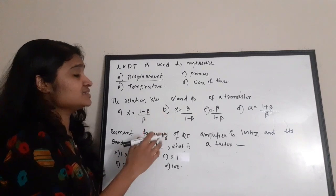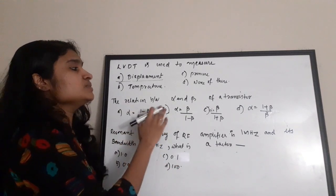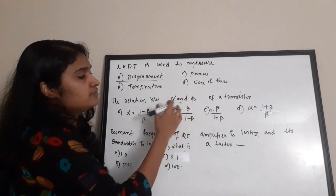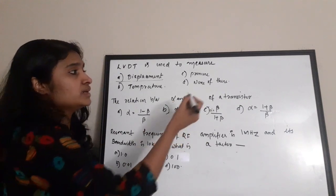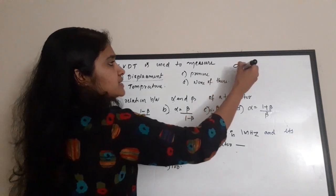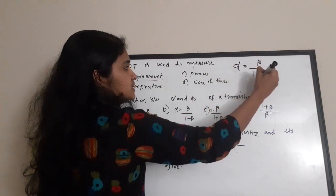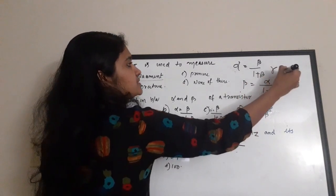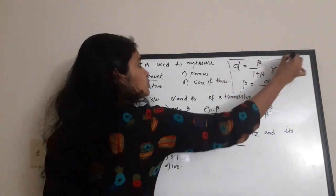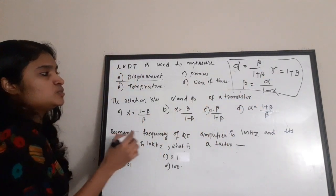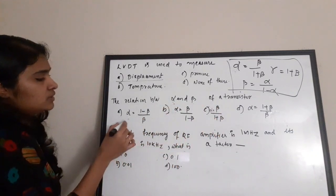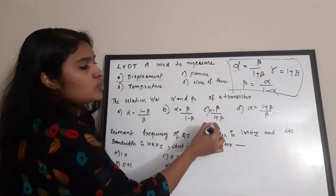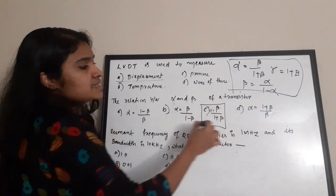Next is a very basic question we have discussed in many videos — the relationship between alpha and beta of a transistor. These are two current gain factors. Alpha = β / (1 + β), beta = α / (1 − α), and gamma = 1 + β. Here we need to find alpha in terms of beta: alpha = beta / (1 + beta). Correct answer is option C.